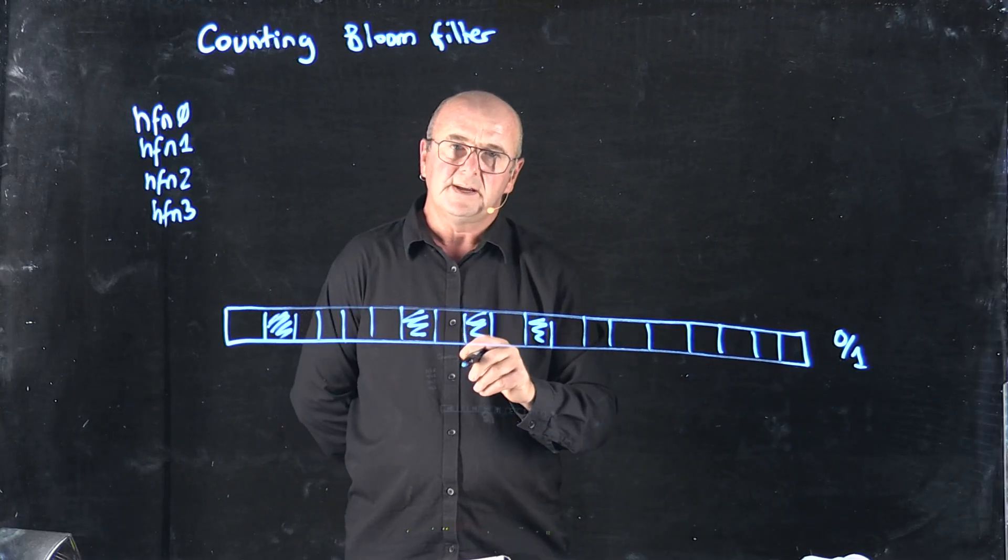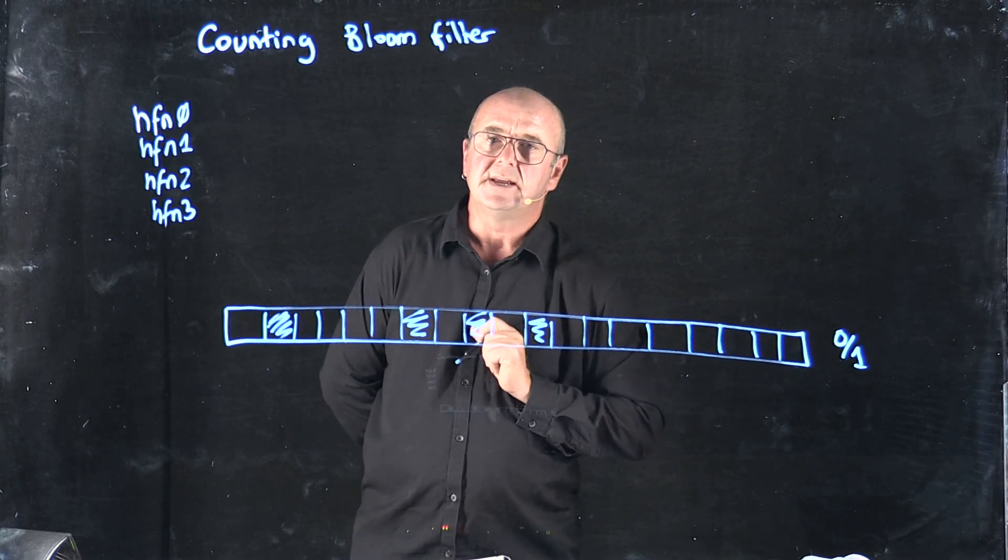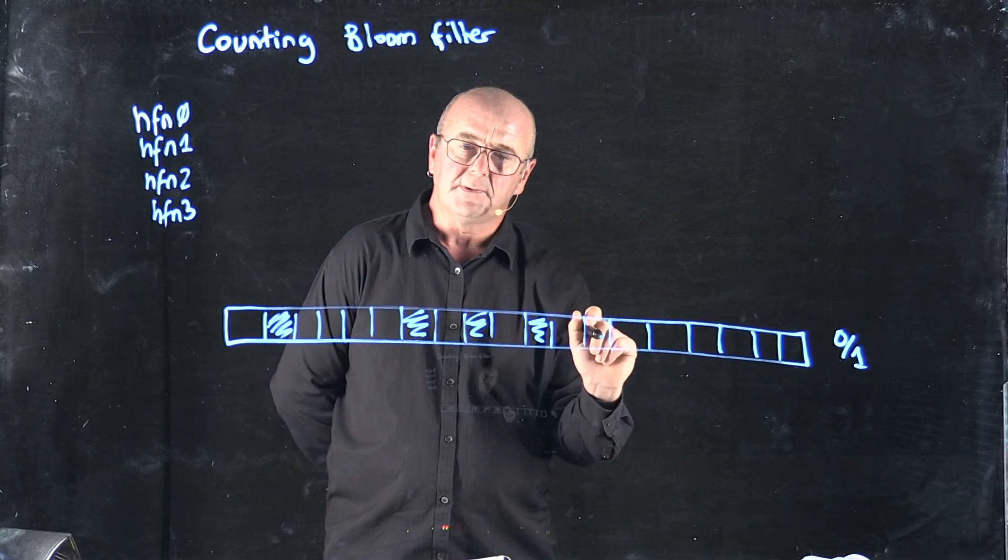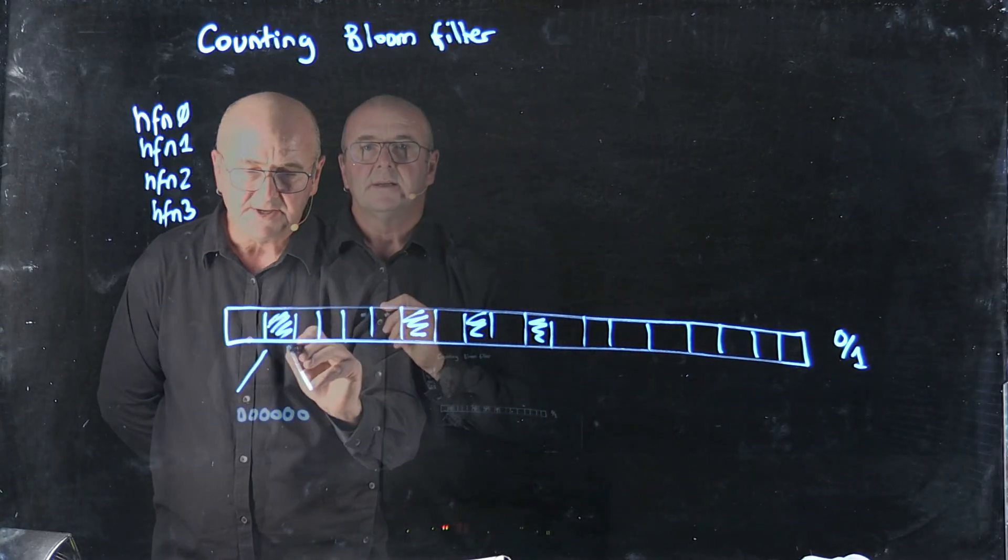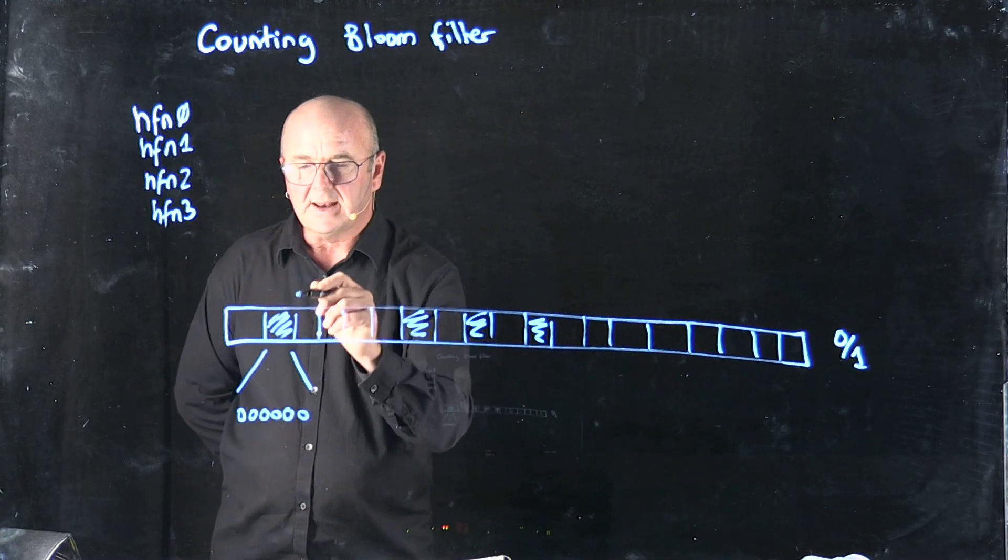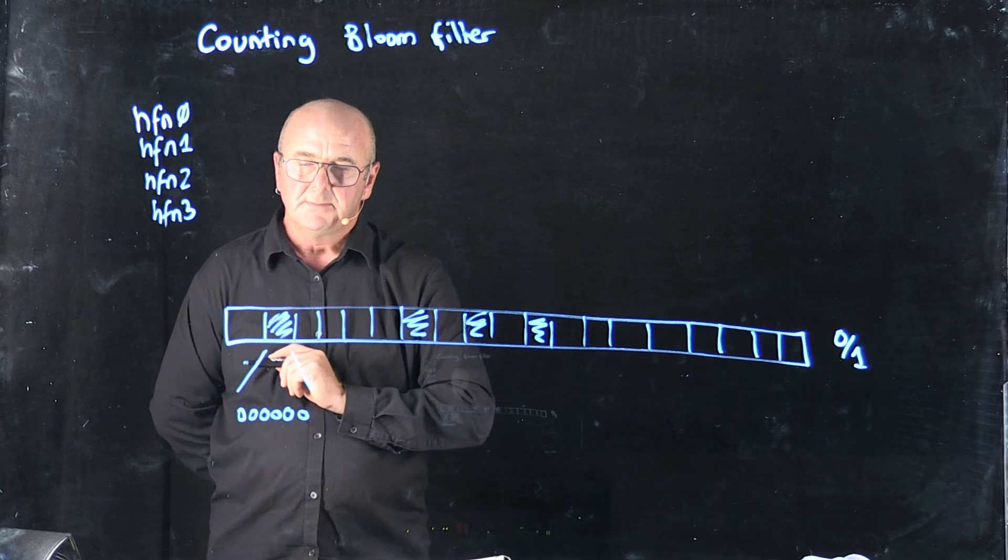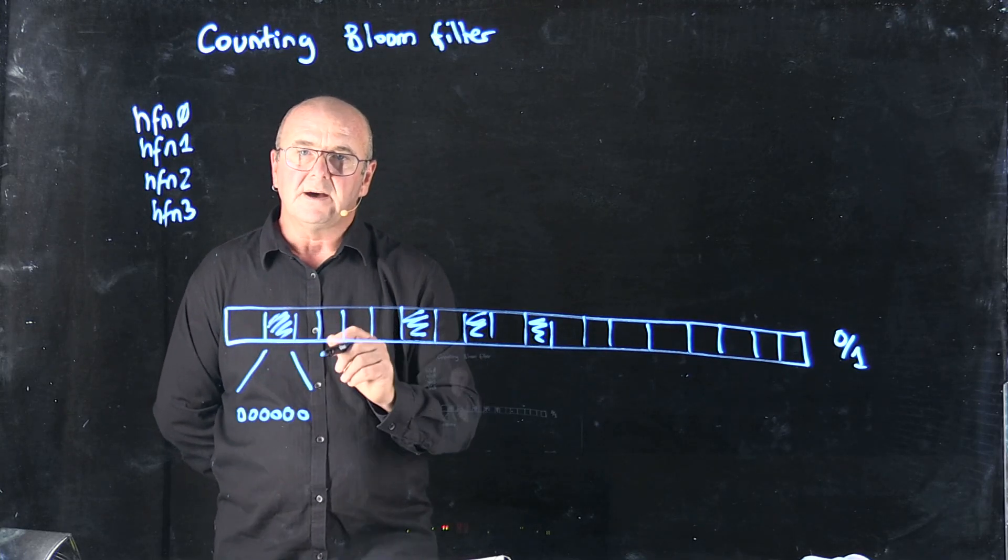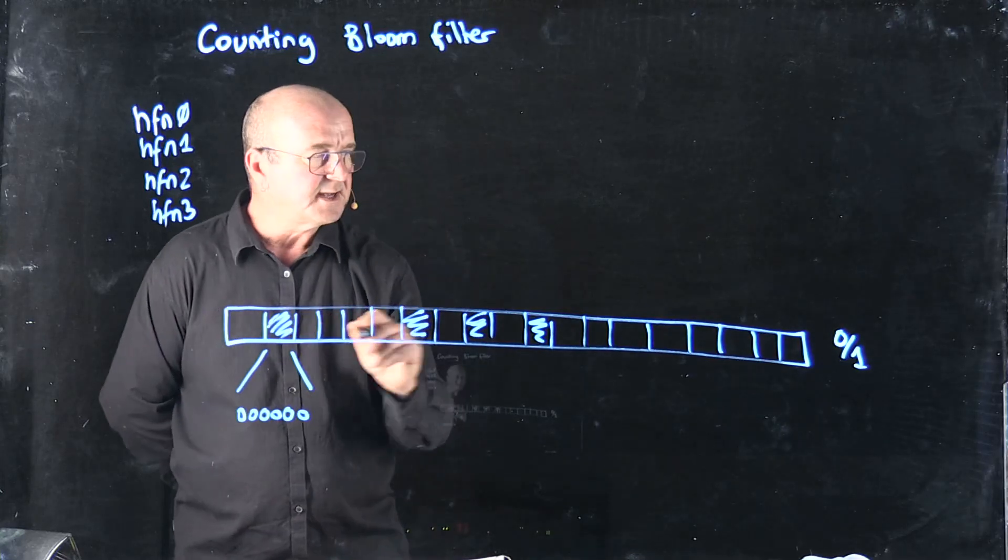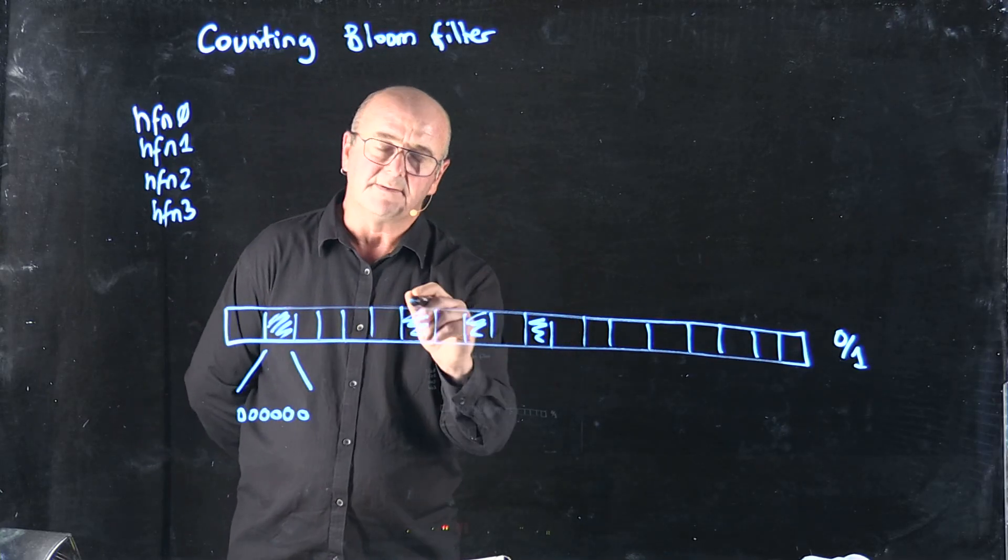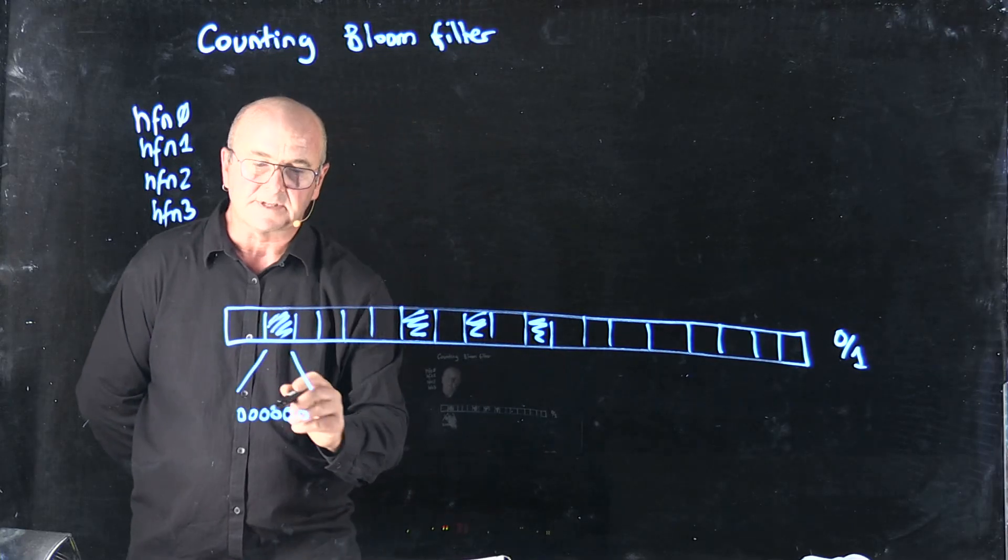But what if instead of having each of the bins be a 0 or a 1, we made each of the bins be a length c, where in my case c is 6 bits. Now instead of just setting the bits to 0 or 1, in fact just setting the bits to 1 like we do in a normal bloom filter...